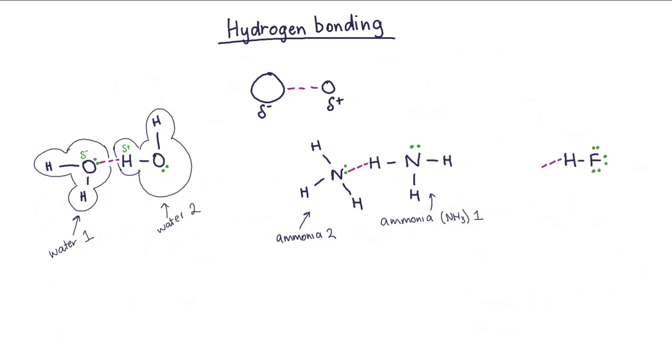Hydrogen bonding can occur between two molecules that are the same, like water, but also between unlike molecules such as this hydrogen fluoride and water. In larger molecules, it can also occur within the molecule where different areas of the molecule hydrogen bond to each other. If there isn't a lone pair available, for example in ammonium NH4+, it won't be able to hydrogen bond.